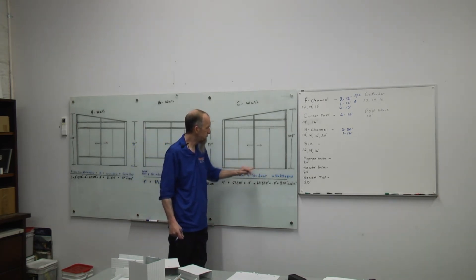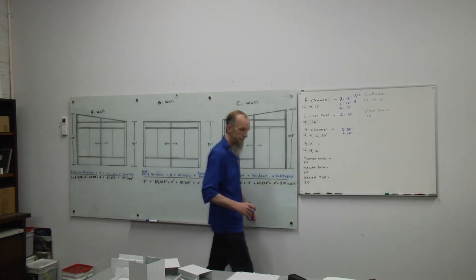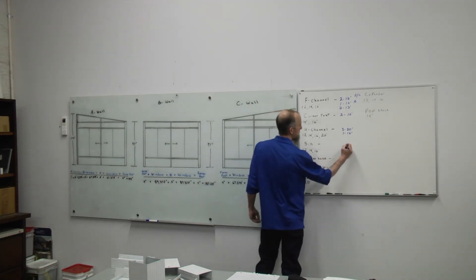Another 12 foot will give us our two pieces for the C wall. So for sill we'll need two 12 foot and one 16 foot.